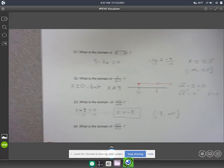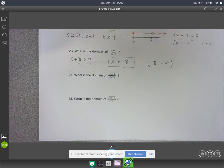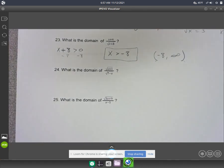All right, moving on to number 24, the domain of square root of x plus 1 and square root of 7 minus x.